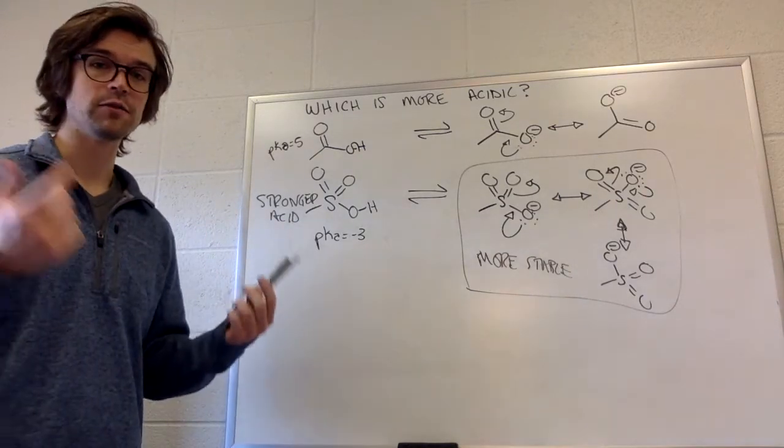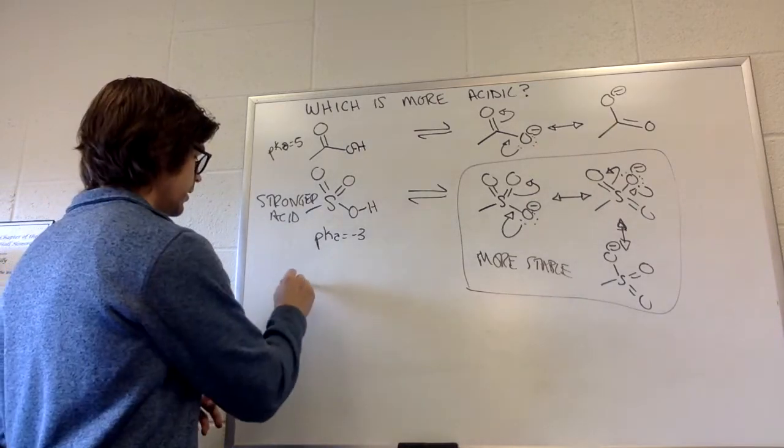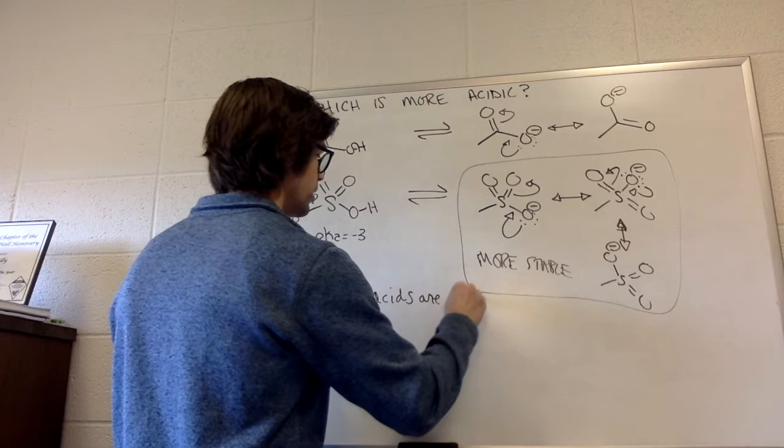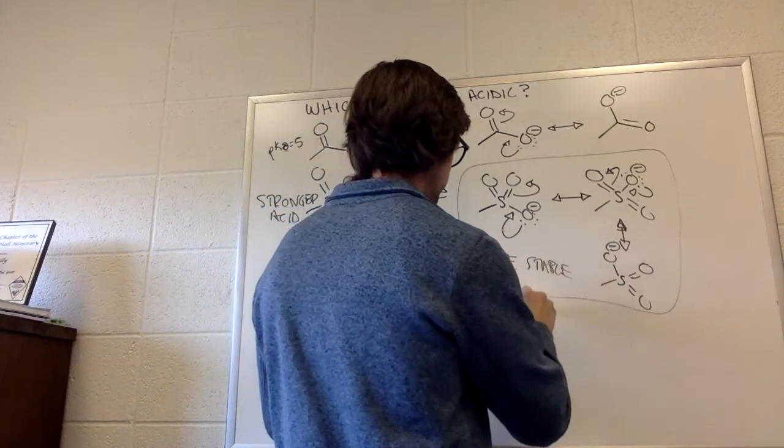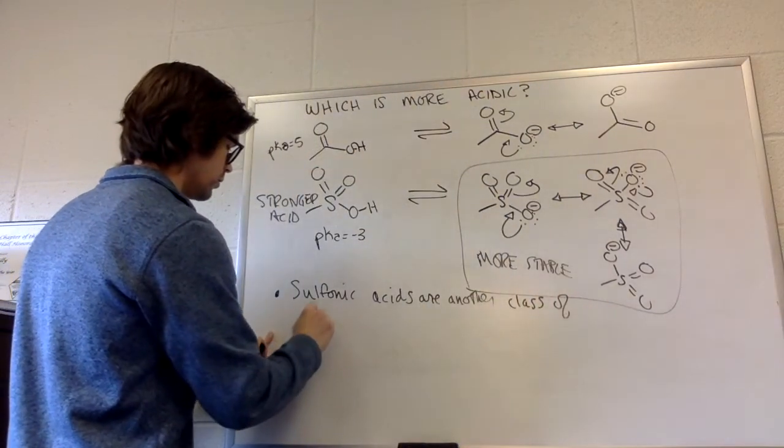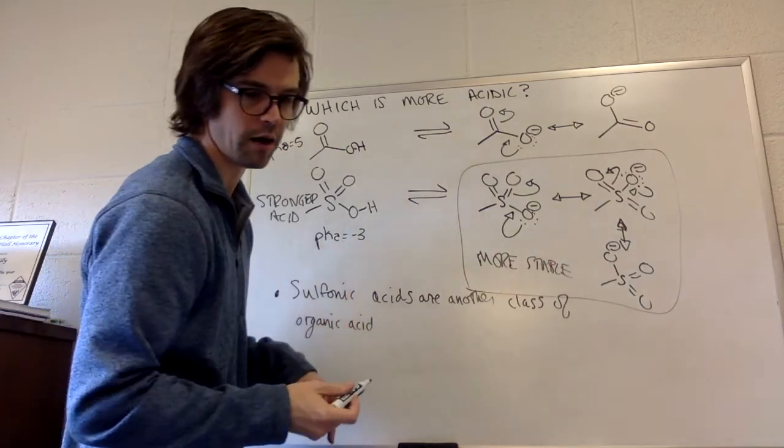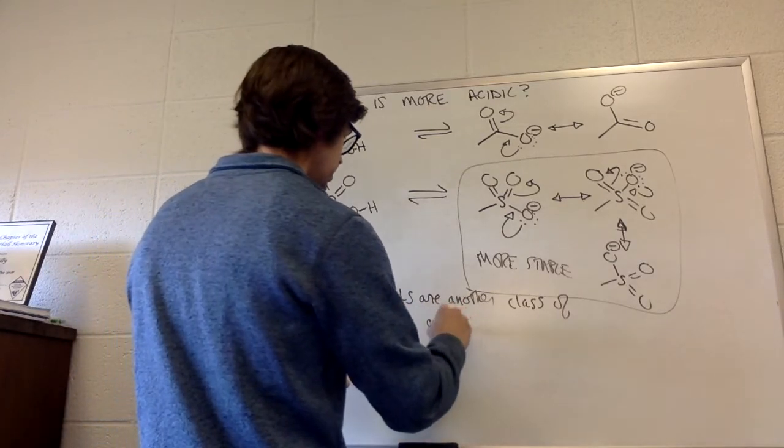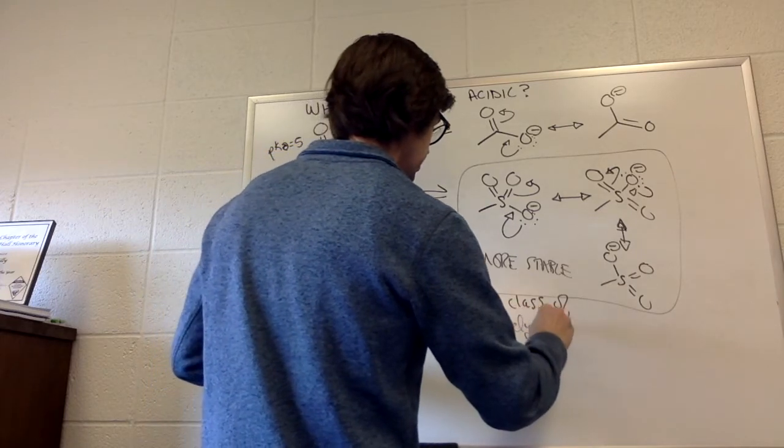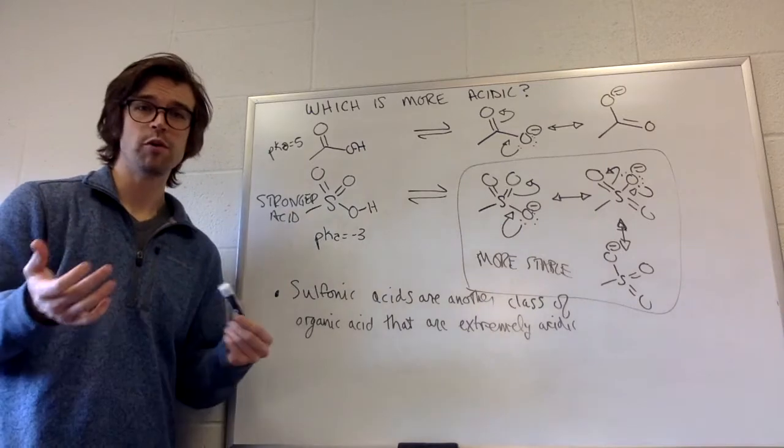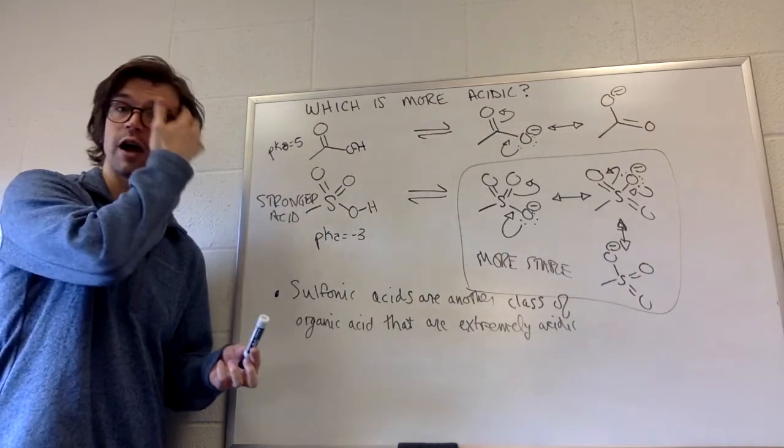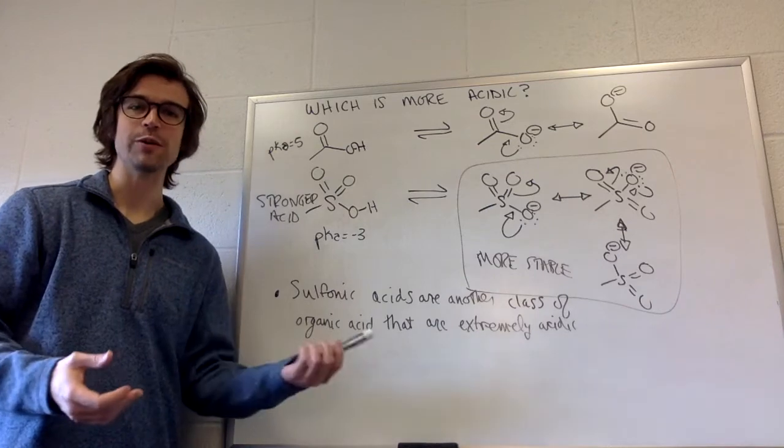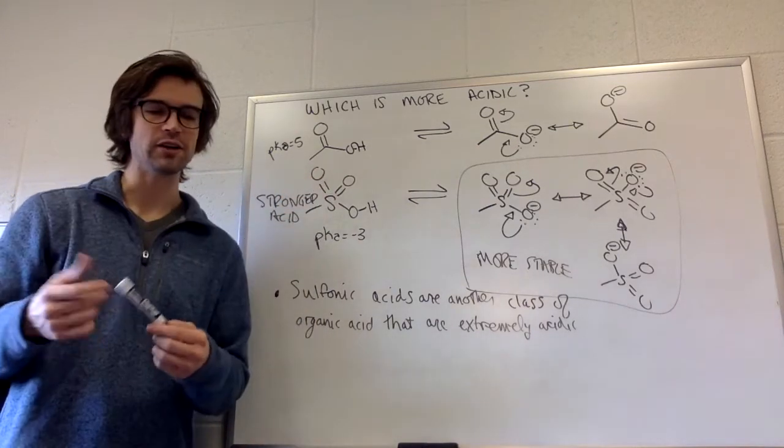So sulfonic acids are another class of organic acids, and it says this on your note sheet. They're another class of organic acid that are extremely acidic. And it's important for us, we're about to move forward into a part of the chapter where we're going to talk about extractions, what we do in the lab to separate organic soluble things from aqueous soluble things.